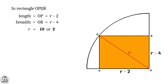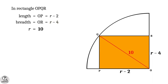Suppose R equals 2 units. Then look at the breadth of the rectangle, which equals R minus 4. If the radius is 2 units, the breadth becomes 2 minus 4 equals minus 2. But that is not possible. So the radius cannot be 2, and hence R must equal 10 units.